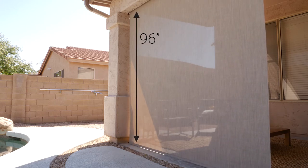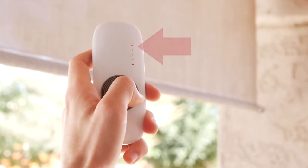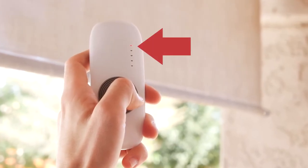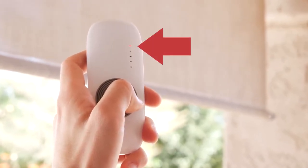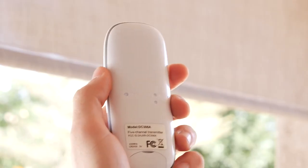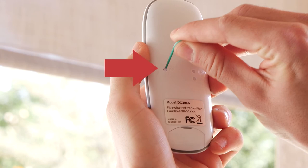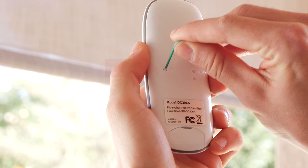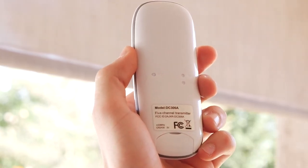If you want to change the top and bottom limits, make sure the remote is set to channel 1 to delete the factory preset limits. Using a straightened paper clip or other small pointy object, press the programming button on the back of the remote. The fabric on the shade will move or jog and the motor will beep.